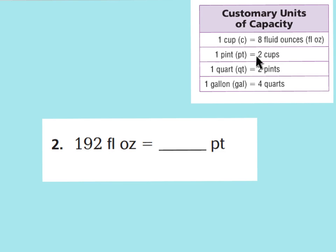If one pint equals two cups and one cup equals eight ounces, then eight ounces for one cup plus another eight ounces for the second cup equals 16 ounces for one pint, because there are two cups in one pint. So now we've discovered that 16 ounces are in one pint. Now we want to know how many pints 192 ounces will be.